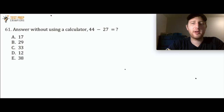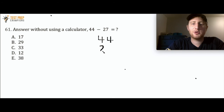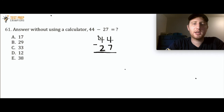Answer without using a calculator: 44 minus 27 equals what? Pause the video, try this out. My preference is to rewrite them with the numbers stacked one on top of the other. 4 minus 7 — well, 4 is smaller than 7, so I borrow from the neighbor, turning the 4 into a 3 and making it a 14. 14 minus 7 is 7, 3 minus 2 is 1. So the answer is A, 17.